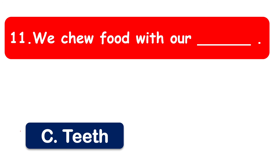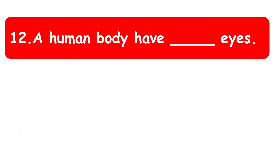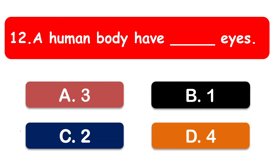A human body has how many eyes? The options are three, two, one, and four. The correct answer is two — we have two eyes.